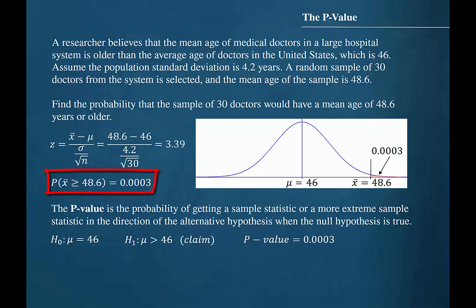This probability, or in other words, the area under the curve in the tail to the right of the sample mean, which is in the direction of the alternative hypothesis, would be the p-value.